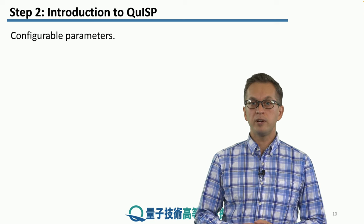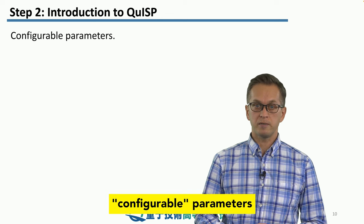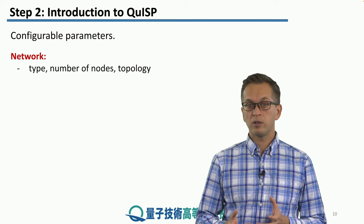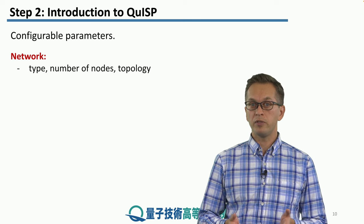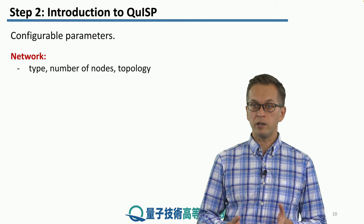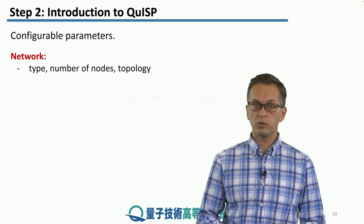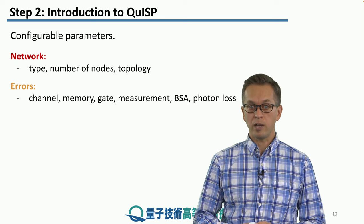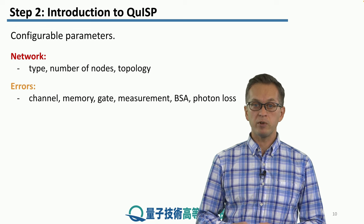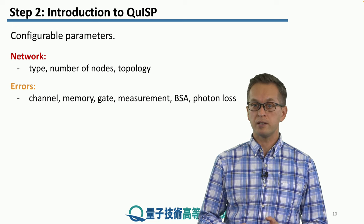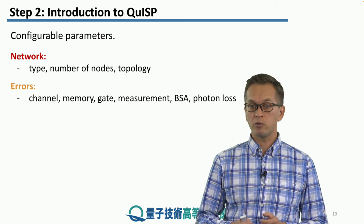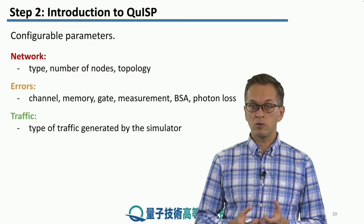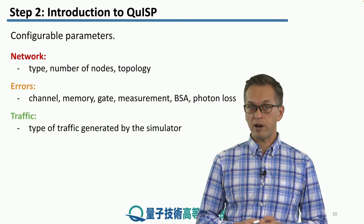So, what are the different configurable parameters in QISP? Well, we can configure the network itself: what types of nodes, what number of nodes we want to use, how are they connected, what is the topology of the network. We can also include errors, namely the channel, the memory, the gate, the measurement, the BSA errors, and crucially, the photon loss.